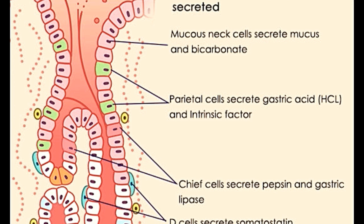The gastric phase occurs with the entry of food into the stomach and the consequent rise in pH and distension of the wall of the stomach. The intestinal phase commences as food enters the duodenum. It is characterized by the secretion of intestinal gastrin. During this phase, acid in the upper section of the small intestine triggers a sympathetic reflex, which in turn inhibits the secretion of gastric juice from the stomach wall.